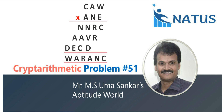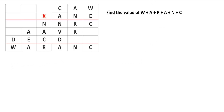Hello everyone. Welcome to Natus and Aperture 1. In this video, I am going to explain the 51st problem of cryptarithmetic multiplication in the cryptarithmetic series. CAW into ANA is equal to WARANC. We will find out the value of W plus A plus R plus A plus N plus C.